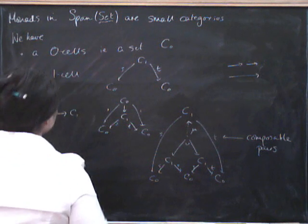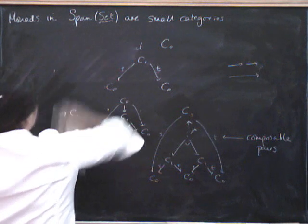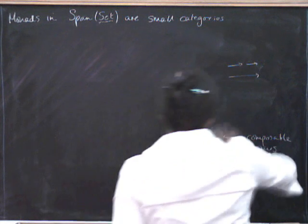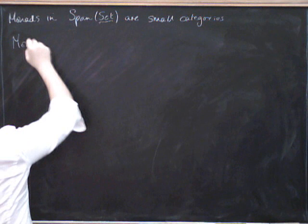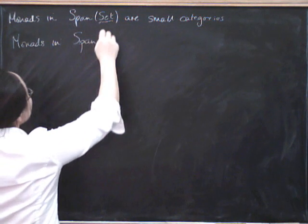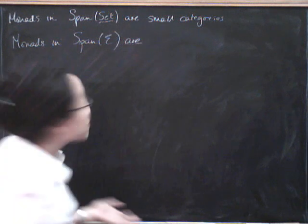Now, what the other thing that this gives us. We can wonder what happens if we take monads in span E for some other E. So monads in span E in general are categories internal to E.